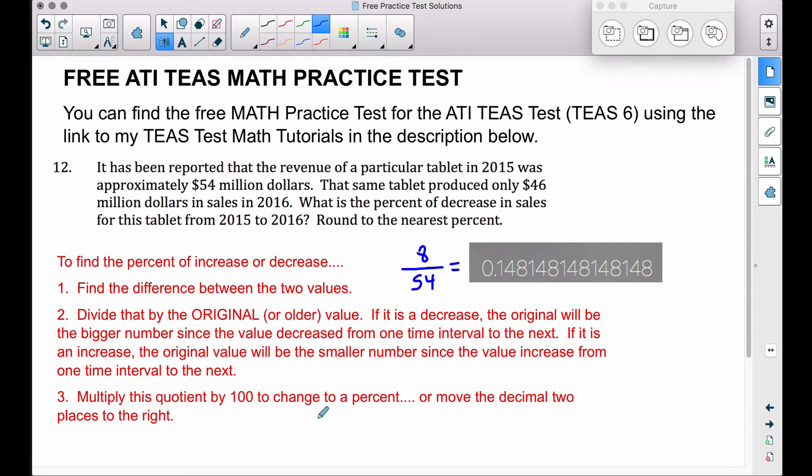The next thing we want to do is convert this to a percent. You can multiply that quotient by 100 to change it to a percent, or you can simply move the decimal two places to the right.